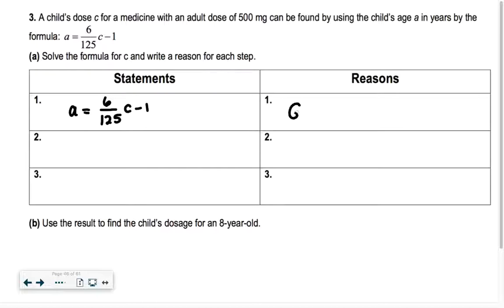Add one. Yeah. So the first reason was given, and then the first step is I'm going to add one to both sides, add one to both sides. So I'm going to say A plus 1 equals 6 over 125 times C. And I did that by the addition property of equality.